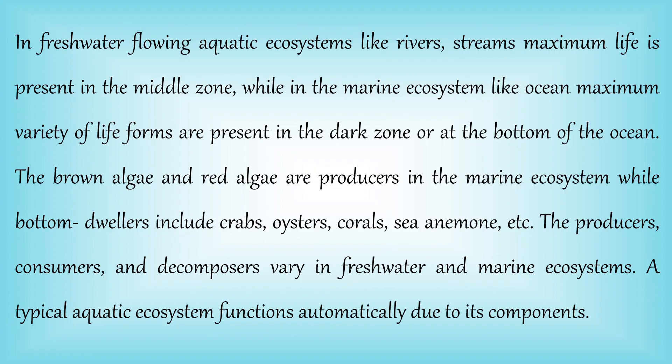In a freshwater flowing aquatic ecosystem like rivers and streams, there is little life at the top but maximum life is present in the middle zone. In the marine ecosystem like the ocean and sea, there is a vast variety of life forms at the bottom — in the dark zone — including brown algae, red algae, crabs, oysters, and corals.